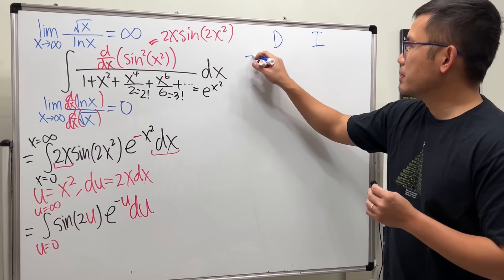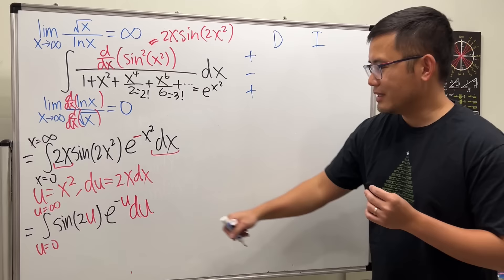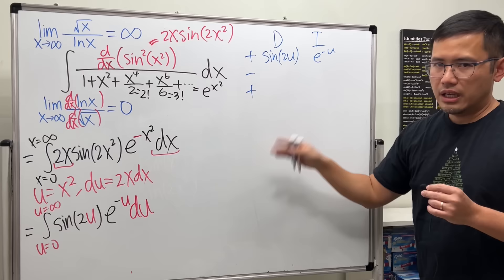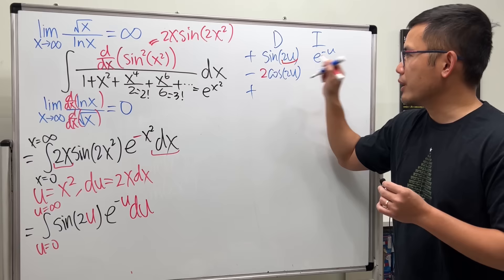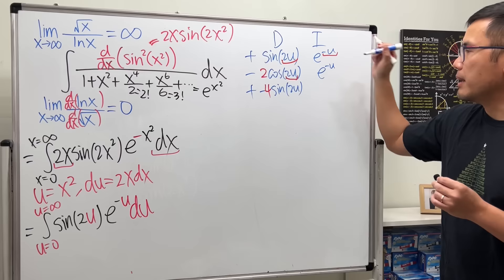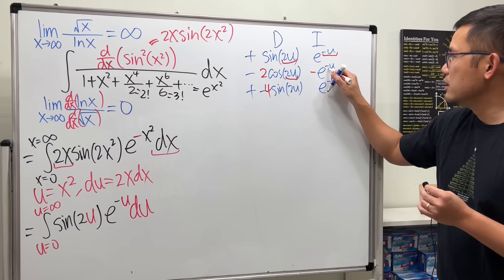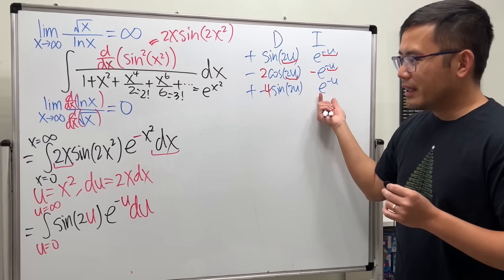Let's get the plus/minus signs ready — put out three of them. We differentiate sin(2u) and integrate e^(−u). Differentiating sin(2u) gives cos(2u) with a chain rule factor of 2; differentiating again gives −sin(2u) with a factor of 4. Integrating e^(−u) gives −e^(−u); integrating again gives +e^(−u). We stop here because sin(2u)·e^(−u) repeats from the original.